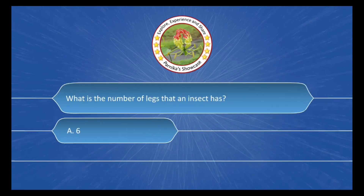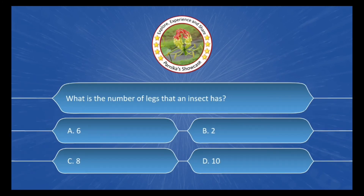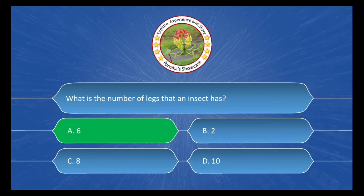Next question is: what is the number of legs that an insect has, and the options are: A. 6, B. 2, C. 8, D. 10. And the correct answer is option A. 6.